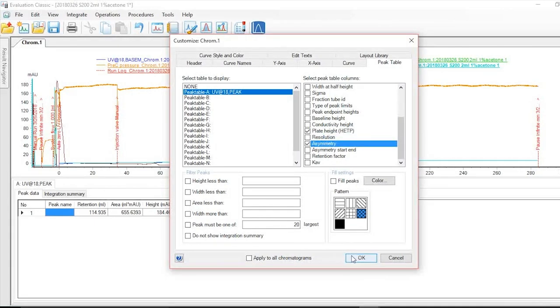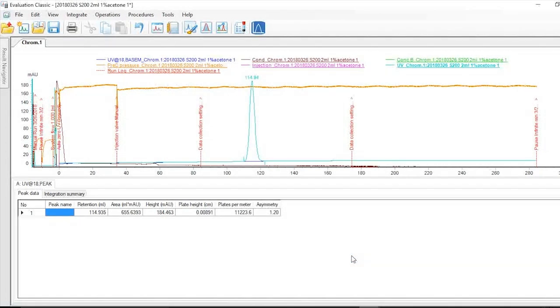The qualified HETP needs to meet the requirements described in the user manual, and asymmetry needs to be between 0.8 and 1.5. Based on these requirements, performance test of this column is passed, and column packing has been successfully performed.